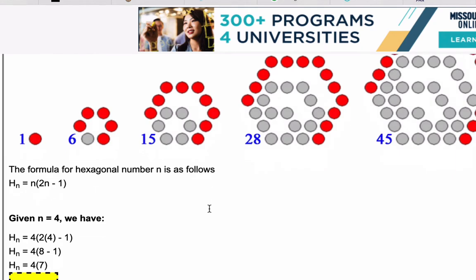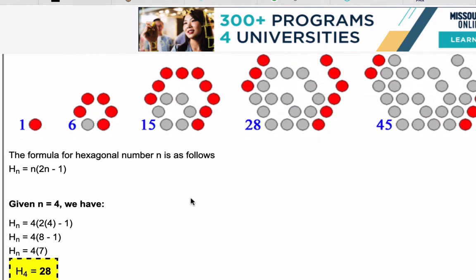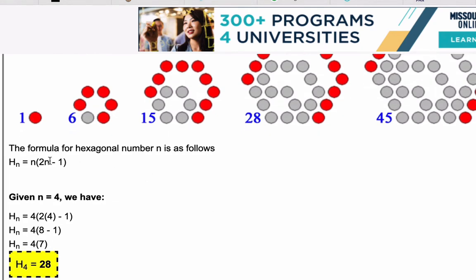Now the key here is if you want to get to the nth hexagonal number, the formula is just H sub n equals n times the quantity 2n minus 1.